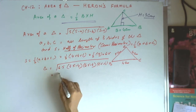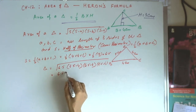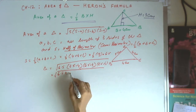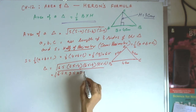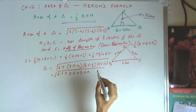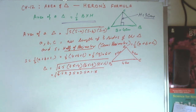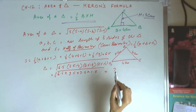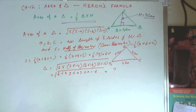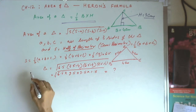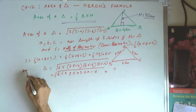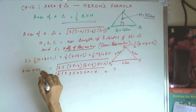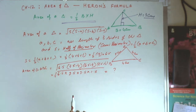So this becomes √(6.5 × 2.5 × 2.5 × 1.5). We can solve this expression and we will get the area of triangle ABC.